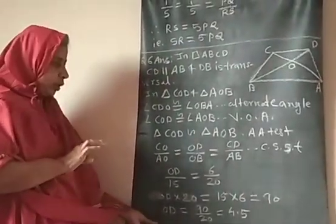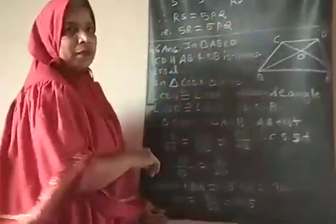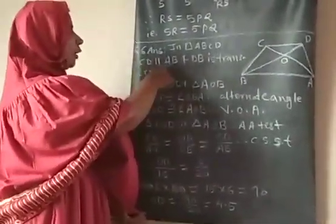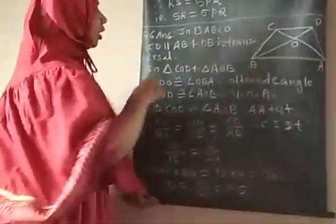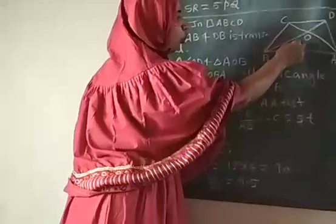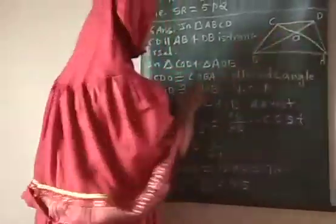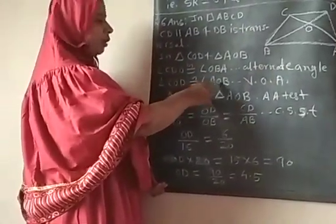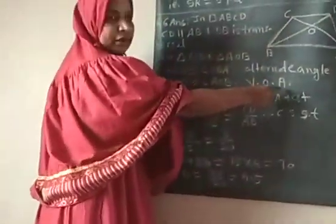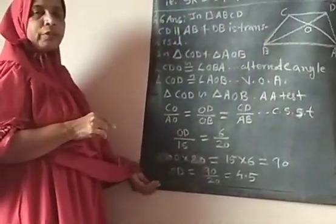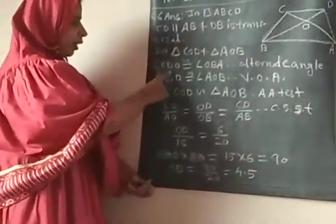Now the next question: quadrilateral ABCD is a trapezium and the diagonals intersect at O. Side CD is parallel to side AB, and we consider DB as a transversal. We select two triangles COD and AOB. In these two triangles, angle CDO is congruent to angle OBA as alternate angles, and angle COD is congruent to angle AOB as vertically opposite angles. By A-A test, the triangles are similar.